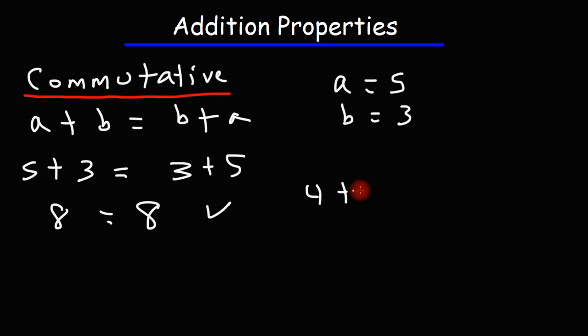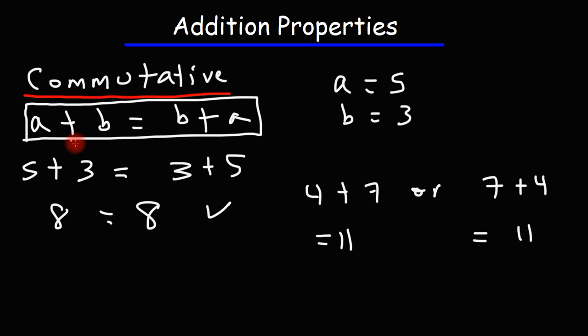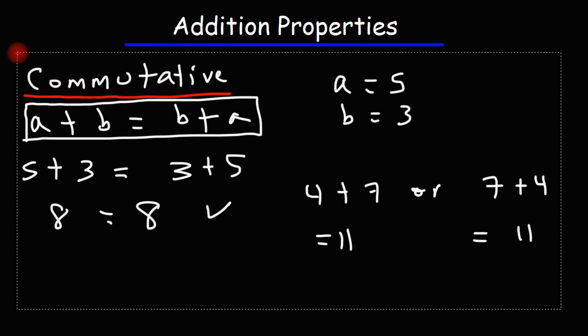So for instance, if we add 4 plus 7 or 7 plus 4, we're going to get the same answer. 4 plus 7 is 11, and 7 plus 4 is also 11. So that's the basic idea behind the commutative property of addition. A plus B is equal to B plus A.